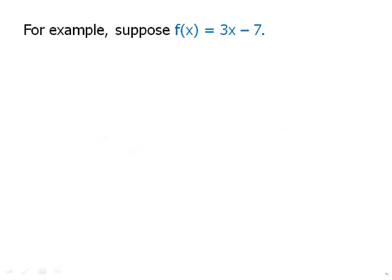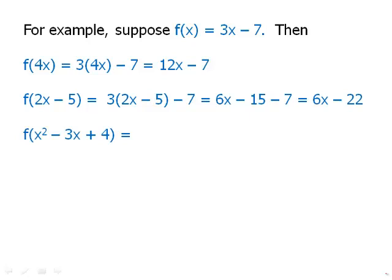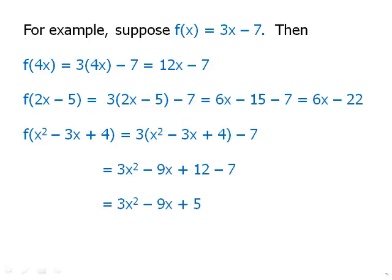For example, let's stick with this function, a nice simple linear function, f of x equals 3x minus 7. Then f of 4x. Well, what would that mean? That means we're going to multiply 4x by 3 and subtract 7. So if we simplify this, we get 12x minus 7. f of 2x minus 5. We're going to plug 2x minus 5. We're going to replace the x in the function equation with 2x minus 5. And so we'll get this. Then just multiply out, simplify, and we get 6x minus 22. We could even plug a quadratic expression into this function. So we're just going to multiply that quadratic expression by 3 and subtract 7. Multiplying everything out, and we get 3x squared minus 9x plus 5.